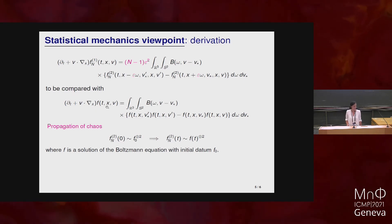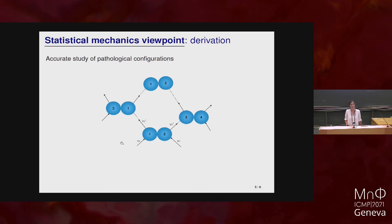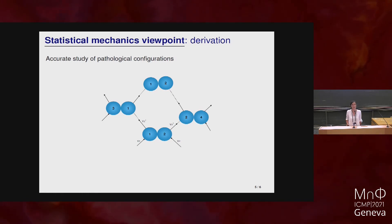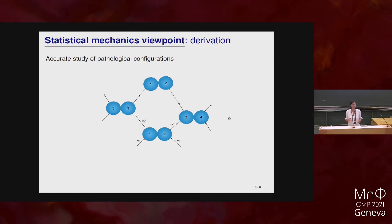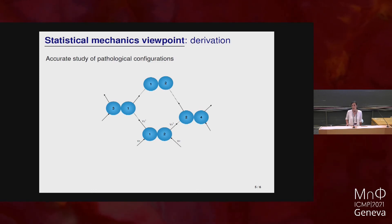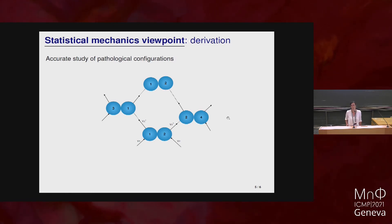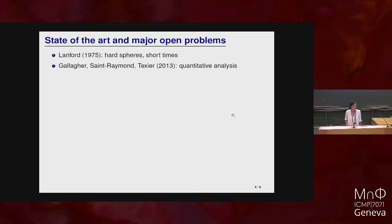The main obstruction to proving propagation of chaos is due to pathological configurations present at the level of particle dynamics but not described by the Boltzmann equation. These are called recollision configurations: two particles that collide at one point, then undergo further collisions with other particles, but then collide again at a later time. The whole point is to prove that this happens with small probability in the Boltzmann-Grad limit.